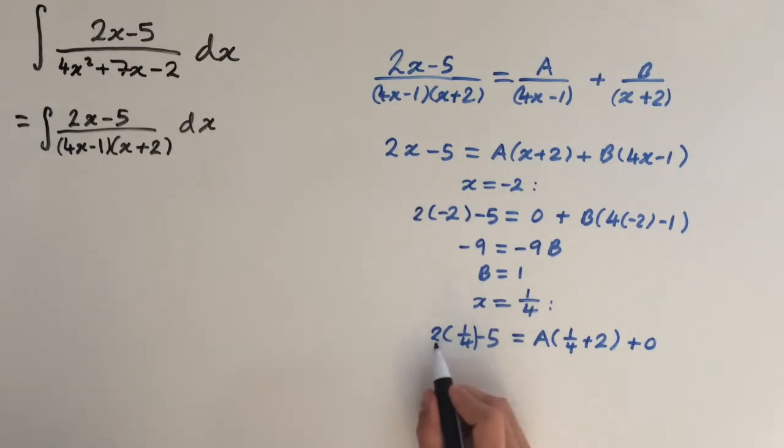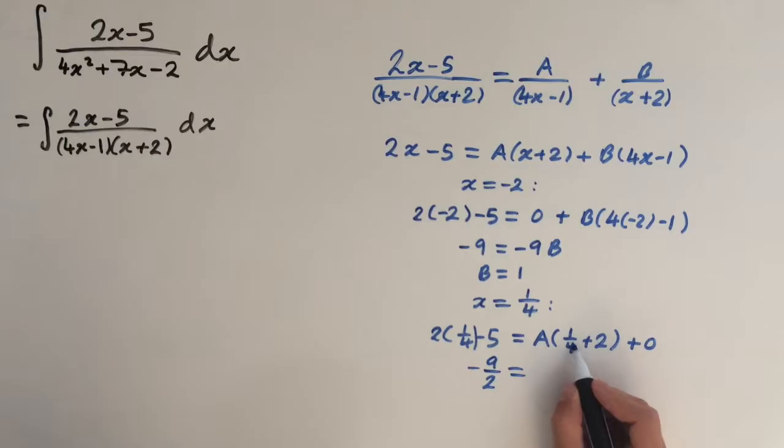So left hand side, this is going to be a half minus 5, which is minus 4.5, or minus 9 over 2. And right hand side is going to be quarter plus 2, 2 we can express as 8 over 4. So 1 over 4 plus 8 over 4 is 9 over 4. So 9 over 4 times A.